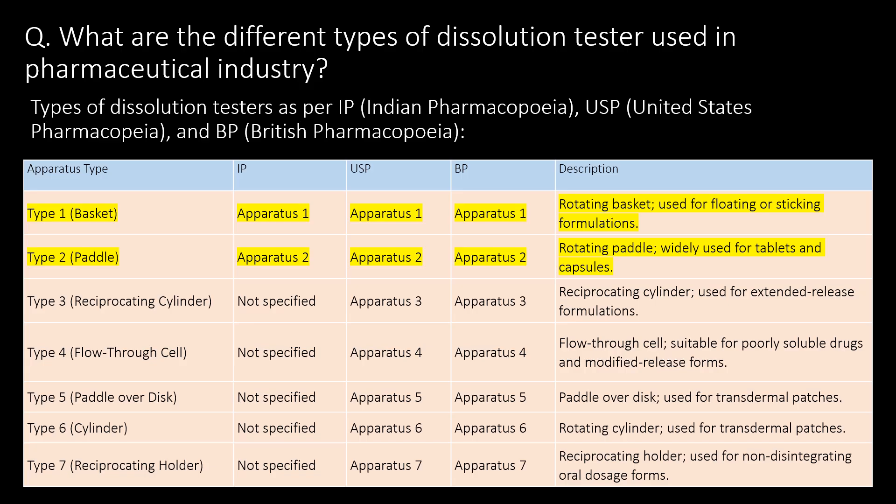A very frequently asked question: what are the different types of dissolution testers used in the pharmaceutical industry? You can refer to the bullet table for different types of dissolution testers as per Indian Pharmacopoeia, United States Pharmacopoeia, and British Pharmacopoeia. The two most commonly used are Type 1 — basket type, also known as apparatus 1 — which has a rotating basket and is commonly used for floating or sticking formulations; and Type 2 — paddle type, also known as apparatus 2 — which has a rotating paddle and is widely used for tablets and capsules.